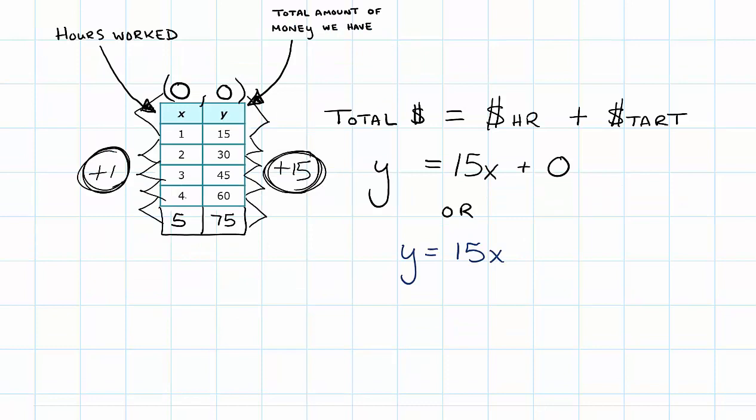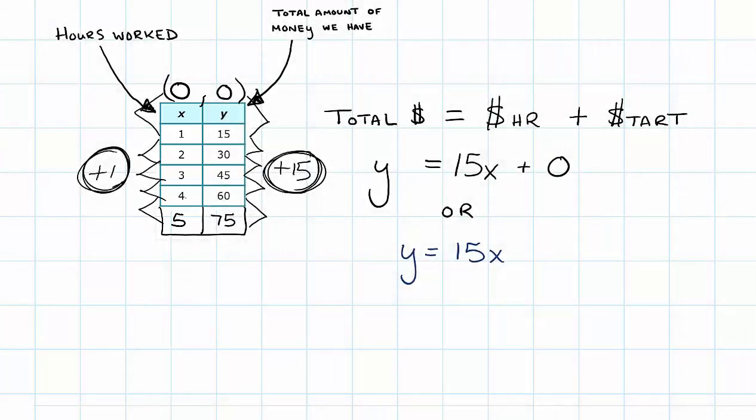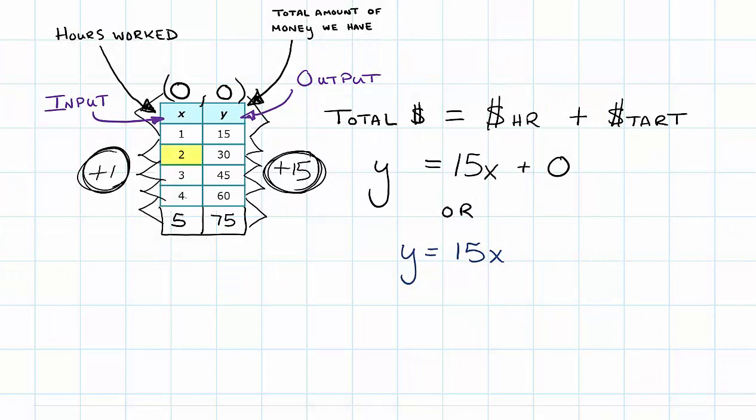Let's talk about some vocabulary. The x value, or the hours that we're working, that's called the input. That's the number that we are putting into our equation. The output is our y value. Output is what happens after we put in our time. So if I work two hours, I put that 2 into our equation, and $15 at two hours gives us a total of $30, which is expressed in our table.